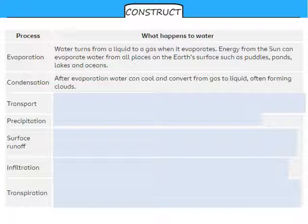After evaporation, water starts to cool down. It loses energy and cools down, and it will convert back from a gas to a liquid. This often leads to the formation of clouds, which are just big clouds of liquid water.